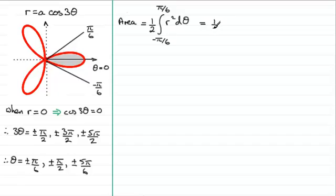So this area is going to be half, and if we square r, we're going to get a squared cos squared 3 theta. I can bring out the a squared outside the integral because it's a constant. Then we've got the integral of cos squared 3 theta integrated with respect to theta going between the limits minus pi upon 6 to pi upon 6.